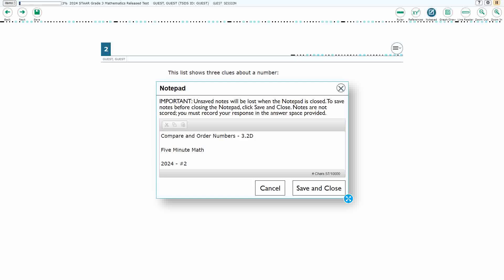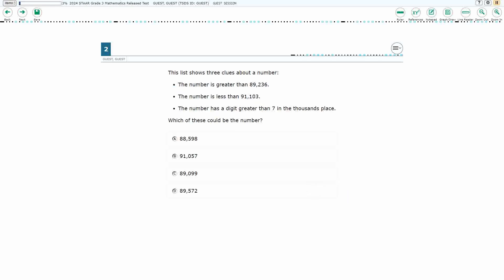Hello, and welcome to 5-Minute Math. Today we are looking at the concept of comparing and ordering numbers. This is standard 3.2D in the great state of Texas. We are using item number 2 of the 2024 released STAR test.